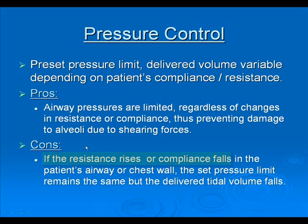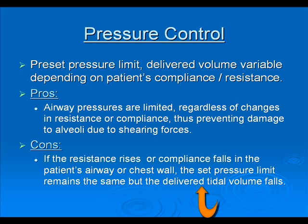One of the cons of pressure control is that if resistance rises or compliance falls in the patient's airway or chest wall, the set pressure limit remains the same but the delivered tidal volume falls. So if a patient starts to develop significant bronchospasm while in pressure control, their delivered tidal volume will fall — the pressure limit will be capped, but since they're not getting their tidal volume, that can be very dangerous. This is a key downfall of pressure control: in the face of increasing airway resistance, volumes are not guaranteed.